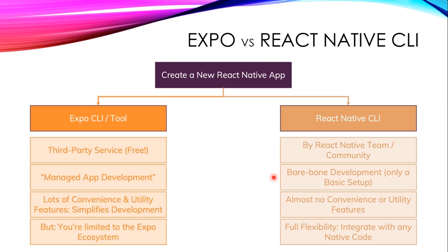With React Native CLI, you need some knowledge of Android as well because it directly creates an Android project. On Windows or Linux you have the Android option; on Mac you have both options — Xcode for iOS and Android Studio for Android. Very basic environment is available and it has almost no convenience or utility features, meaning if any bug comes up during development you need to fix it on your own.